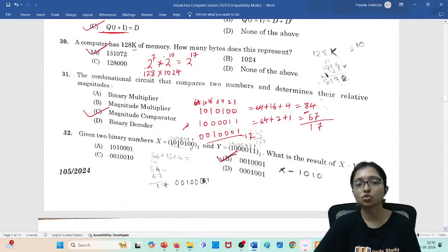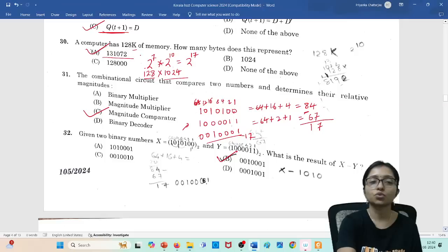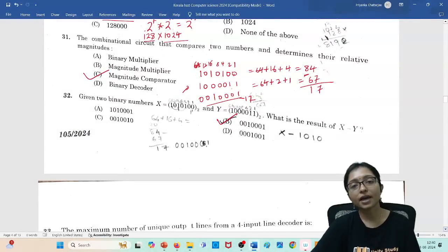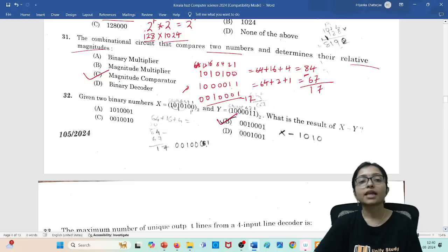128K memory, how many bytes will be there? Definitely it is 2^7 multiplied by 2^10, because K means 2^10. So it is 128 multiply 1024, that is 131,072. This is your correct answer. The combinational circuit that compares two numbers and determines the relative magnitude, that is magnitude comparator.